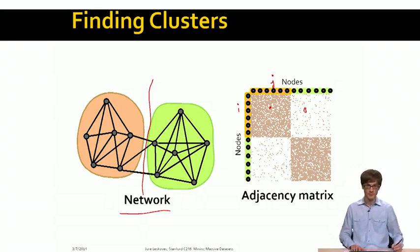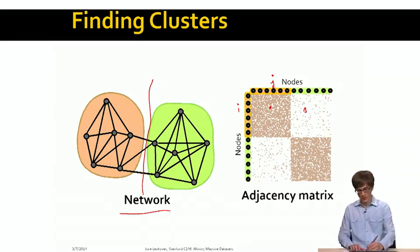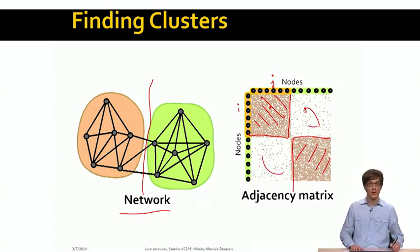And in the presence of clusters, what we see is that this adjacency matrix can be reordered in such a way that we have two clusters where there is lots of connections between the members of the cluster. Here's another one, lots of connections, and then there are very few connections between the two clusters in the off diagonal parts.